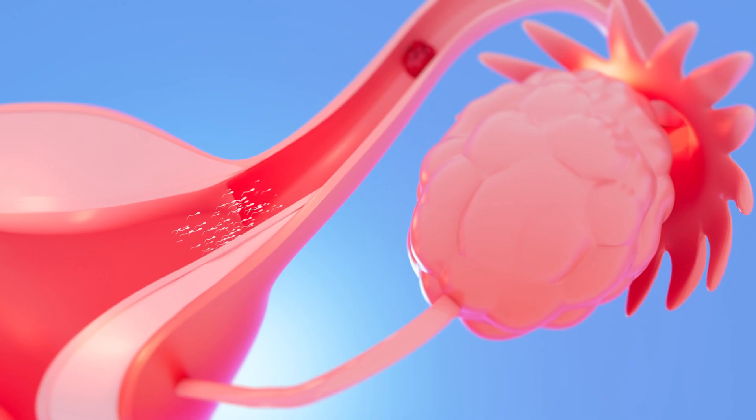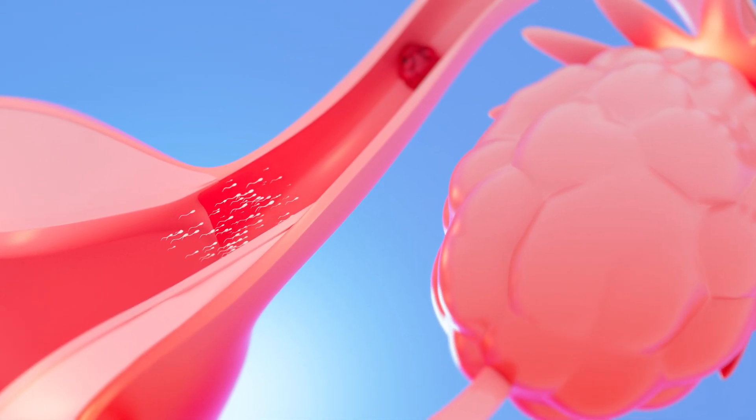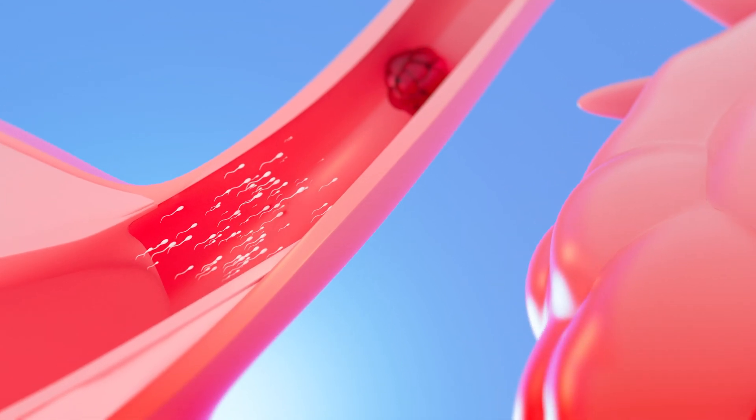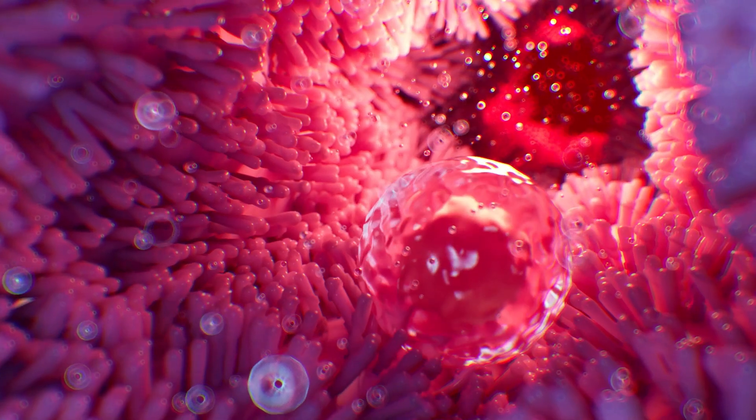Subsequently, half of the sperm enter one fallopian tube, while the other half navigates towards the fallopian tube where the unfertilized egg awaits. At this point, only a few thousand sperm remain within the fallopian tube.